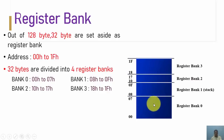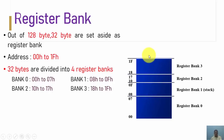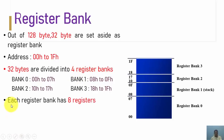Bank 0 has 8 bytes, bank 1 has 8 bytes, bank 2 has 8 bytes, and bank 3 has 8 bytes. So 8 multiplied by 4 gives us a total of 32 bytes, and these 32 bytes are termed as the register bank.